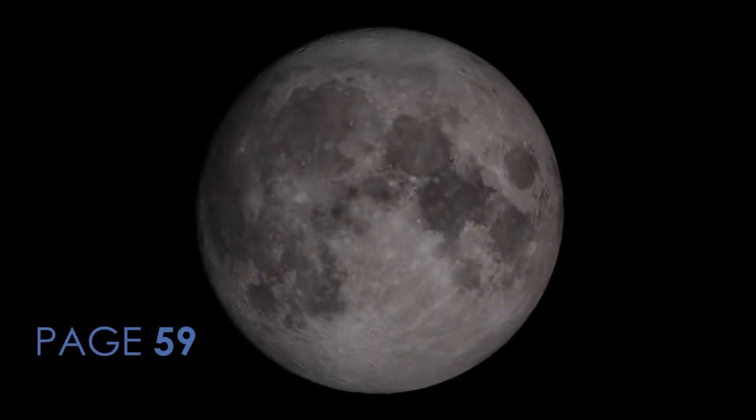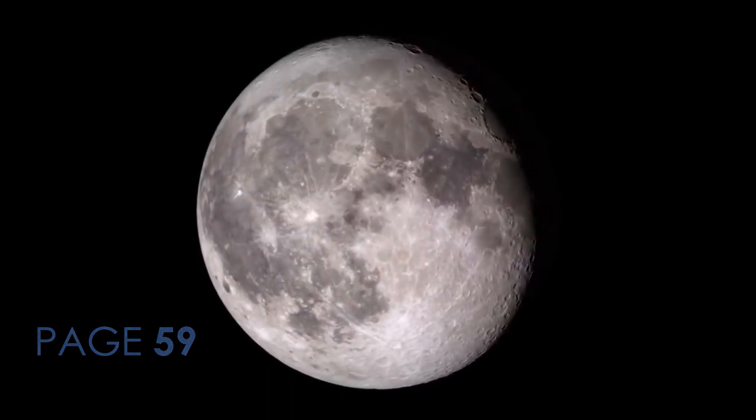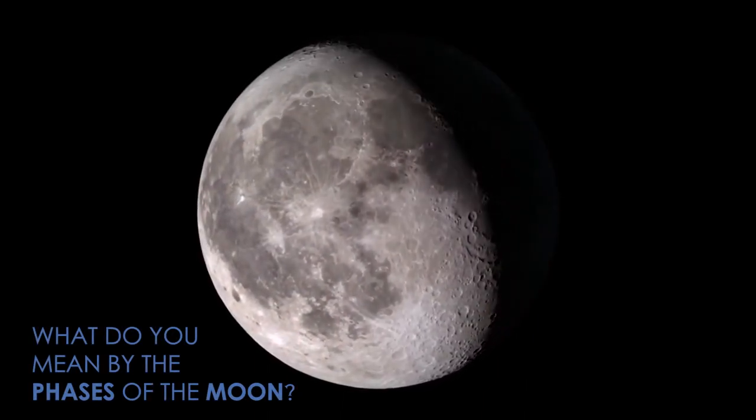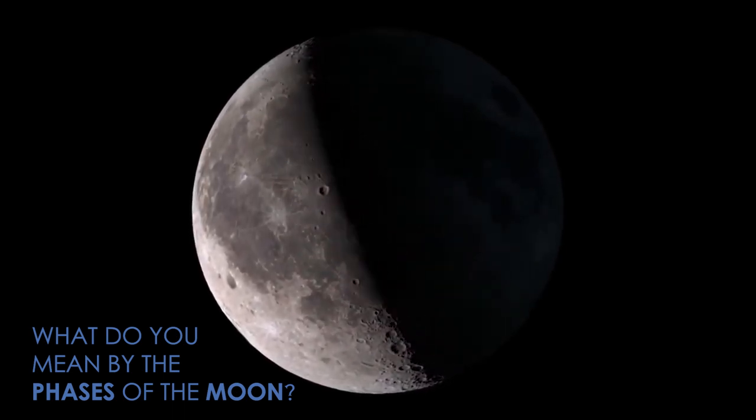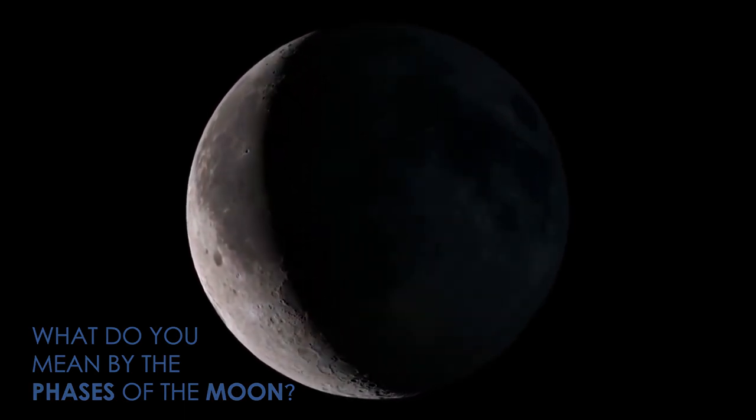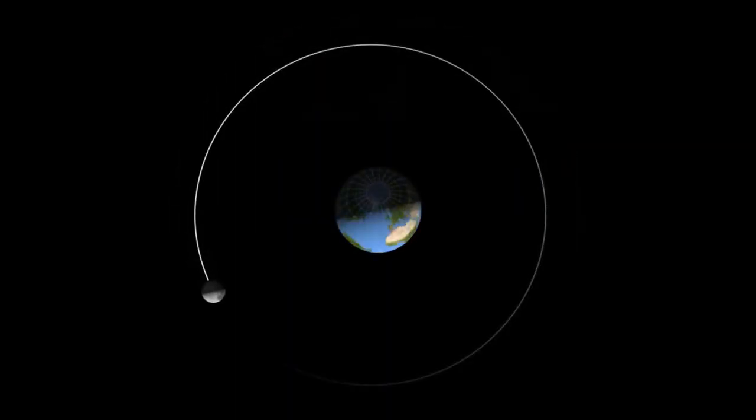Now I am going to explain page 59, the phases of the moon. What do you mean by the phases of the moon? The changing shapes of the bright part of the moon that we see are called the phases of the moon.